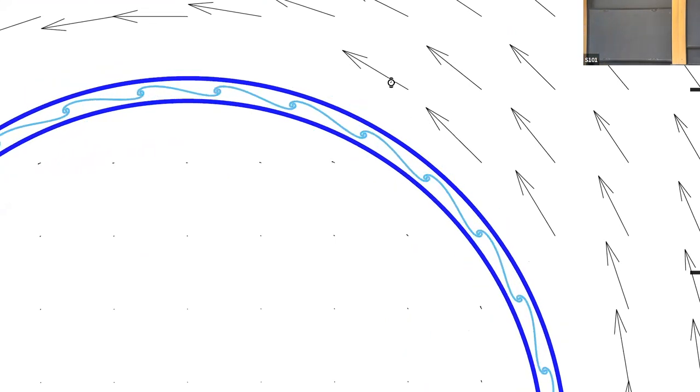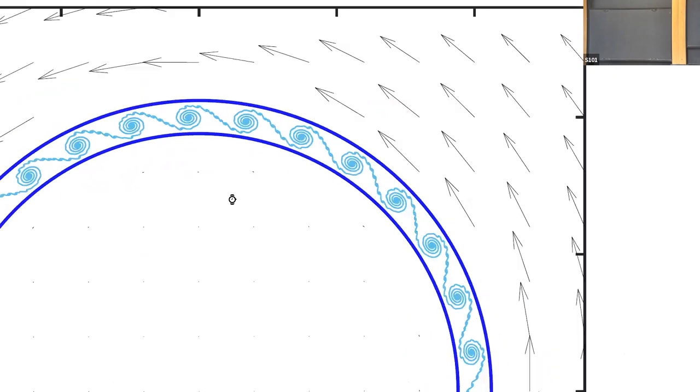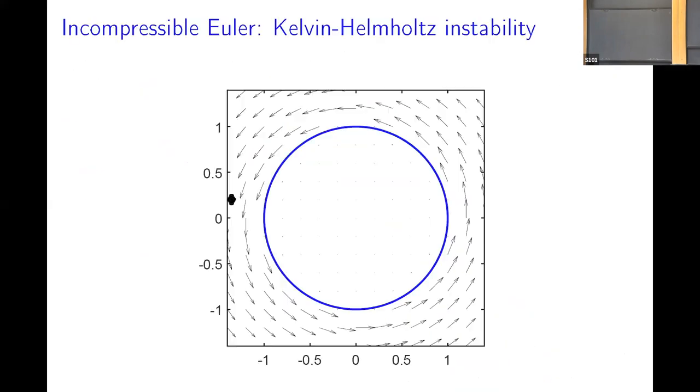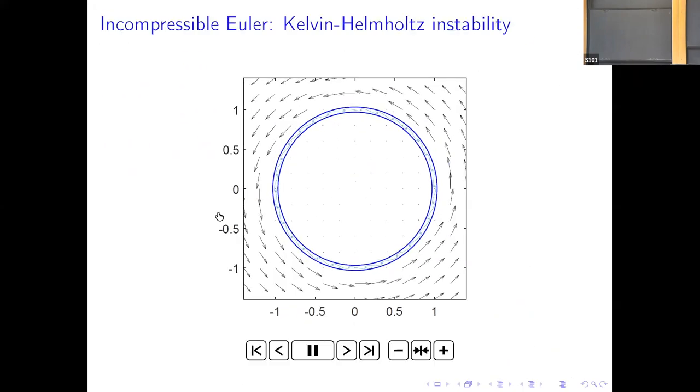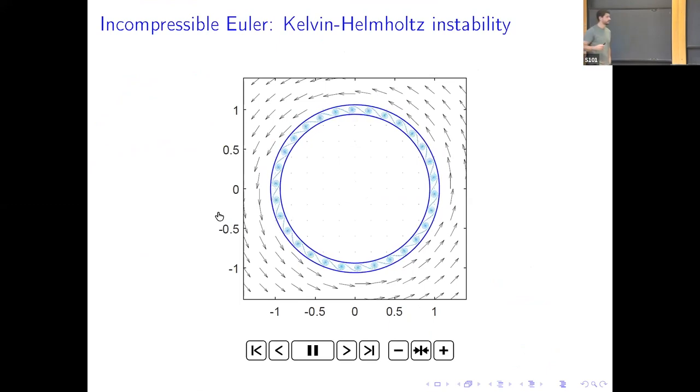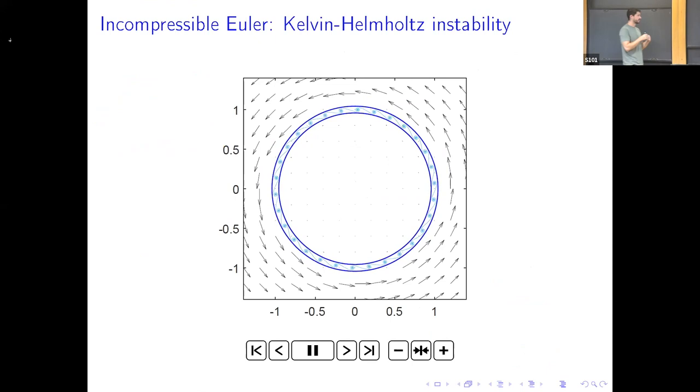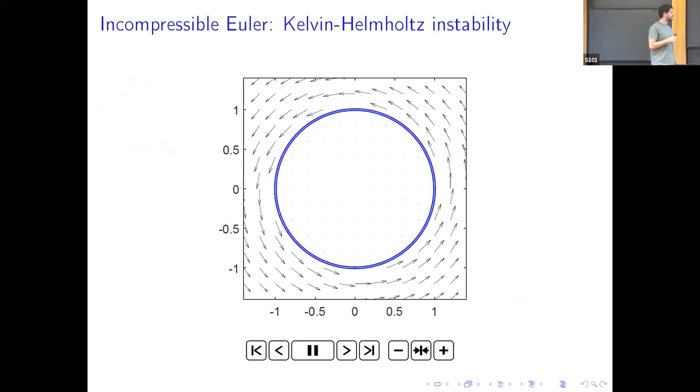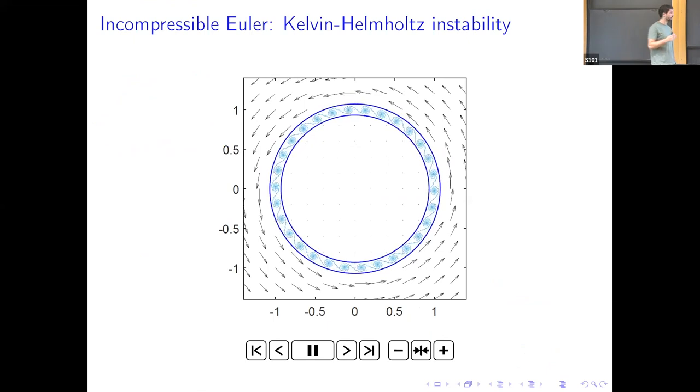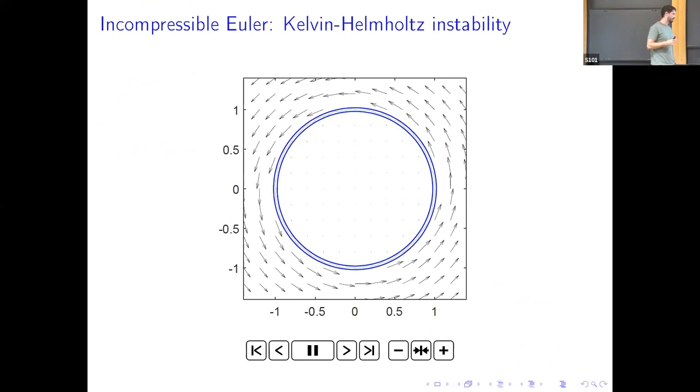What we observe is that this curve tends to roll up into spiral vortices. So, heuristically, this suggests that there is a strip that starts to grow around this curve, where outside the flow behaves smooth, but inside it may behave more irregular.